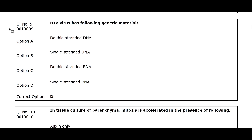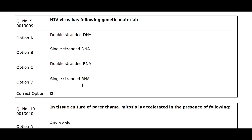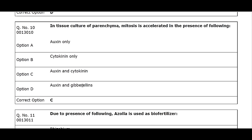Q9. HIV virus has the following genetic material: Option A. Double-stranded DNA. Option B. Single-stranded DNA. Option C. Double-stranded RNA. Option D. Single-stranded RNA. Correct option D.